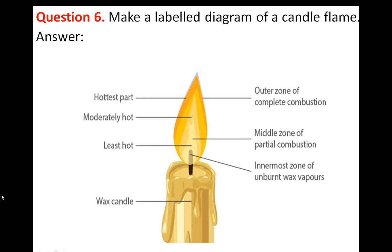Question 6: Make a labelled diagram of a candle flame. The outer zone or hottest part has a bluish colour due to complete combustion. The middle zone is moderately hot and has partial combustion. The innermost zone is the least hot, containing unburned wax vapour, and is somewhat blackish in colour. This is the labelled diagram of a candle flame.